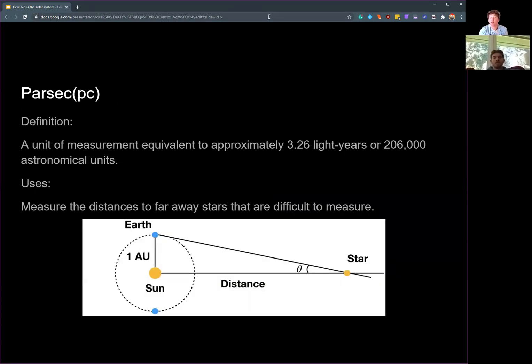And lastly, we have the parsec, which is probably the most useful unit of measure. Essentially, it's a unit of measurement equivalent to approximately 3.26 light years or 206,000 astronomical units.